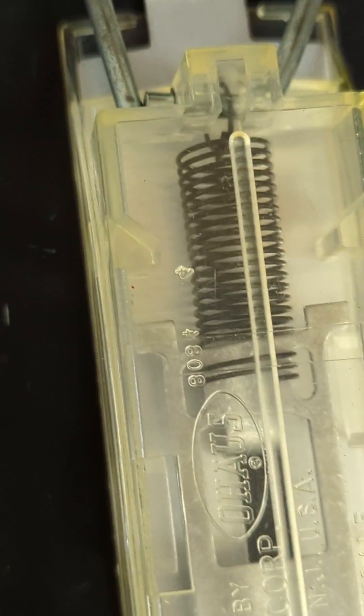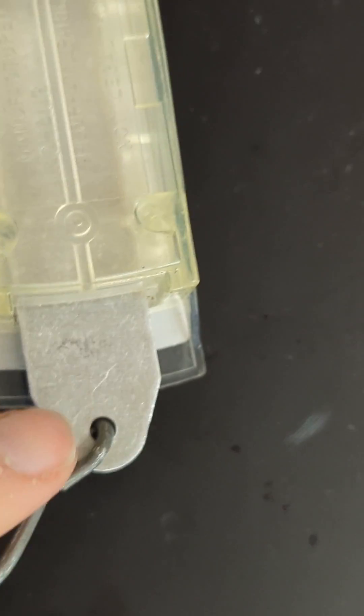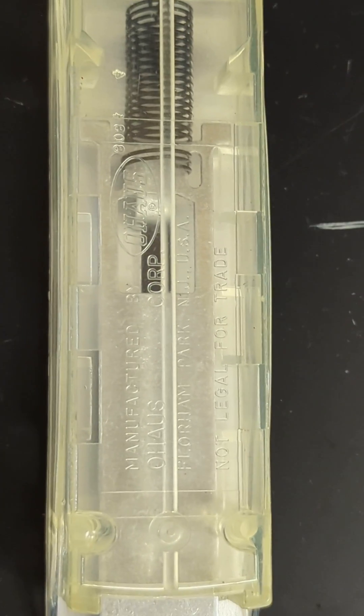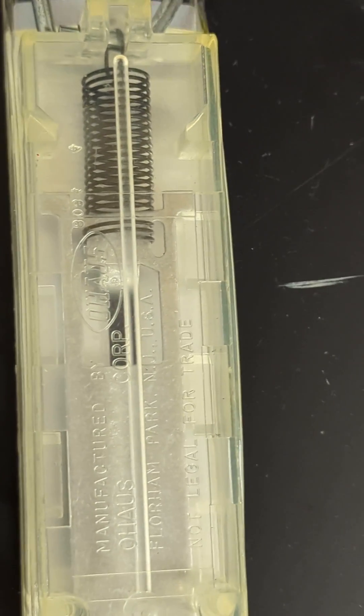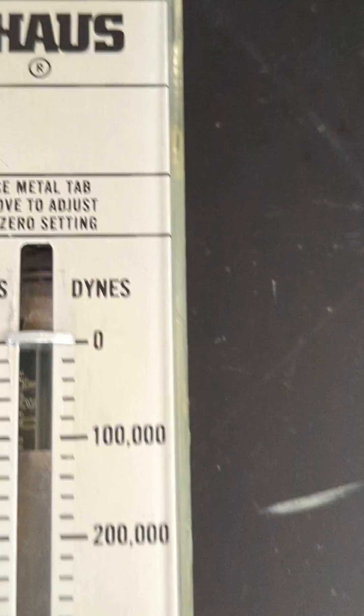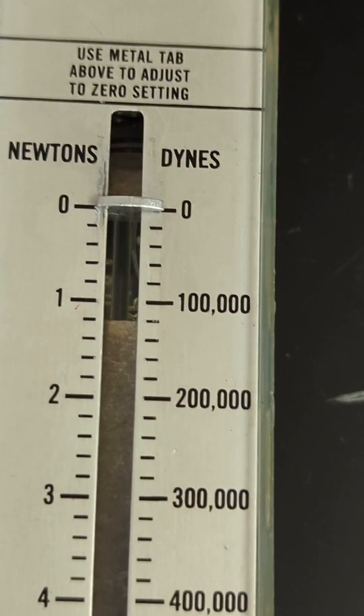What happened was, remember this spring is holding up this bar and this hook. And when we put it horizontally, it no longer has to hold that up. And so it contracts the spring a little bit when we change from vertical to horizontal, and it's no longer calibrated.